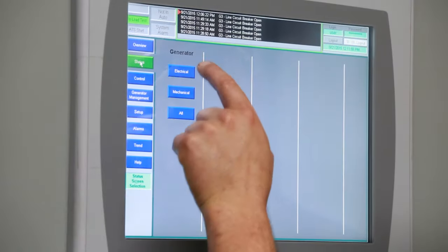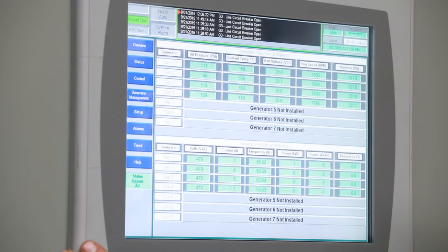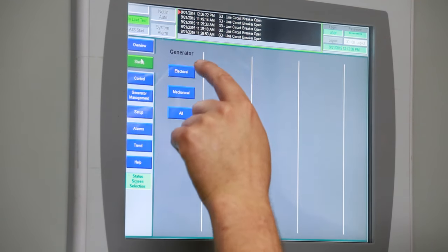Paralleling controls provide the operator with an overview of the system, status of generators, electrical and mechanical information, oil pressure and coolant temperature, engine speed, and all outputs for each individual unit.